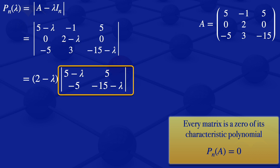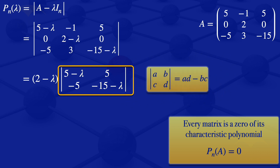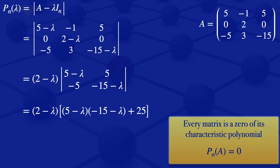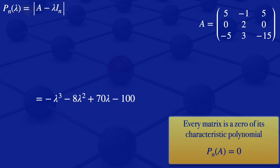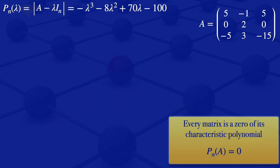We are computing the determinant of a 2 by 2 matrix. The determinant of matrix ABCD is AD minus BC. Using that formula, the highlighted part simplifies to 2 minus lambda multiplied by (5 minus lambda)(minus 15 minus lambda) plus 25. Expanding this gives minus lambda cubed minus 8 lambda squared plus 70 lambda minus 100. So the characteristic polynomial is minus lambda cubed minus 8 lambda squared plus 70 lambda minus 100.